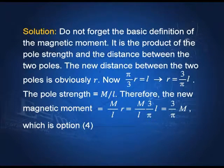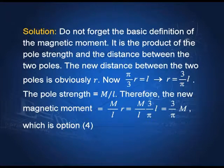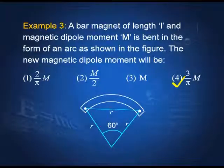To find r: the arc length equals the angle times the radius, so (π/3)·r = l, giving r = 3l/π. The original pole strength was M/l, since the magnetic moment M equals l times the pole strength. Therefore, the new magnetic moment is the pole strength times the new distance r: (M/l)·(3l/π) = 3M/π, which is option 4.